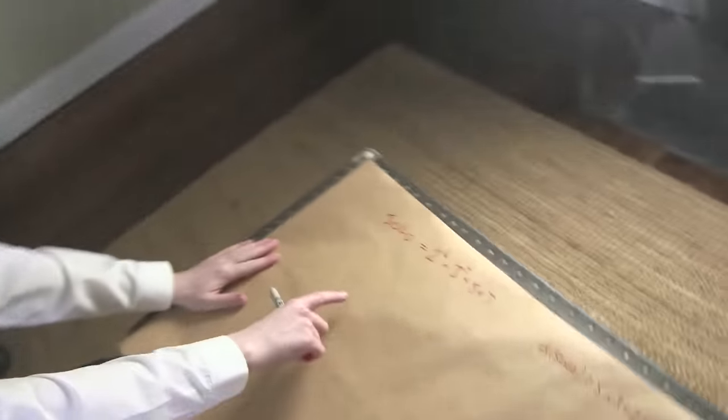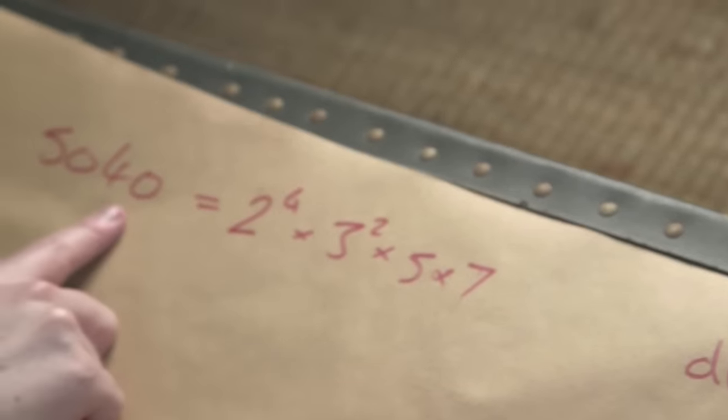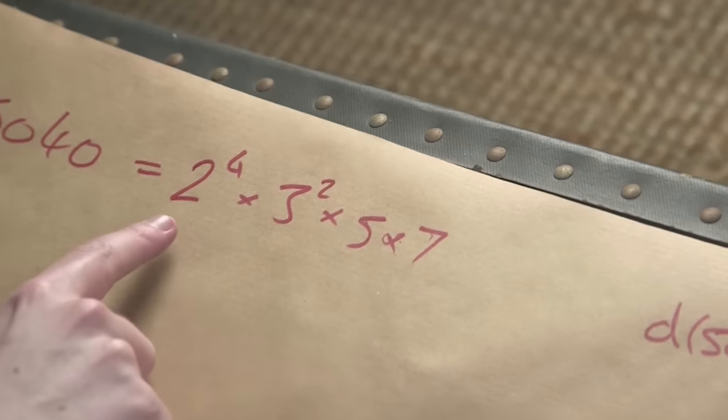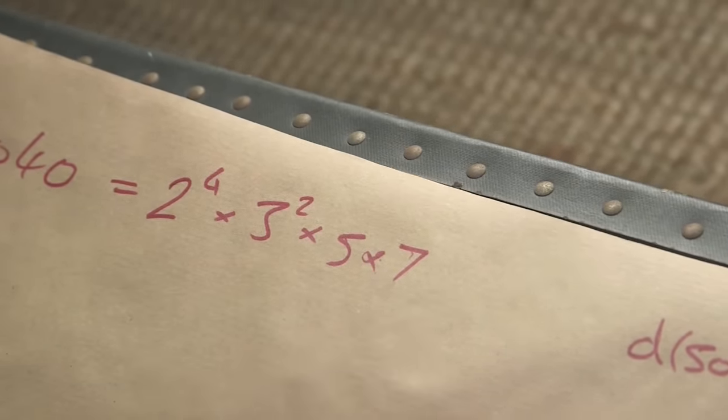A hundred years ago, Ramanujan started studying these, and he noticed three properties that highly composite numbers have to have, which I'll show you now. They're not too difficult to understand. The first property is the primes of the factorization of our highly composite number have to be consecutive primes. I mean, look, that's what happened here. If you look at 5040, they were consecutive primes. They were 2, 3, 5, and 7.